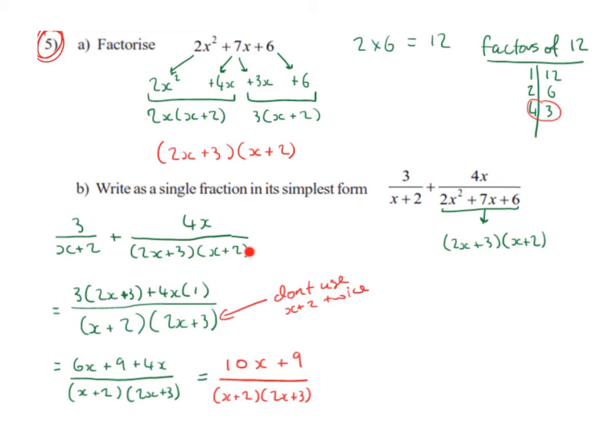So that's what I've done down here: I kept the 3 over x plus 2 the exact same, I brought down the plus. I kept the 4x as my numerator. So all I did was swap the 2x squared plus 7x plus 6 for 2x plus 3 multiplied by x plus 2. This is the important bit.